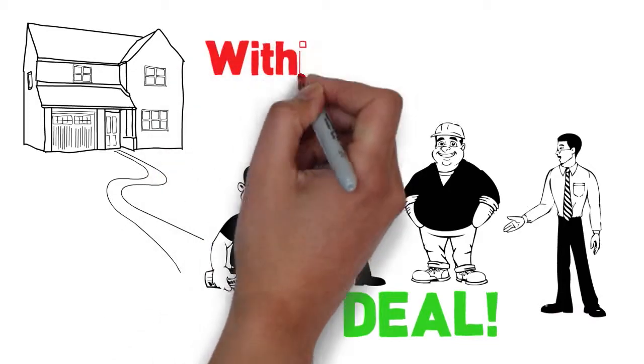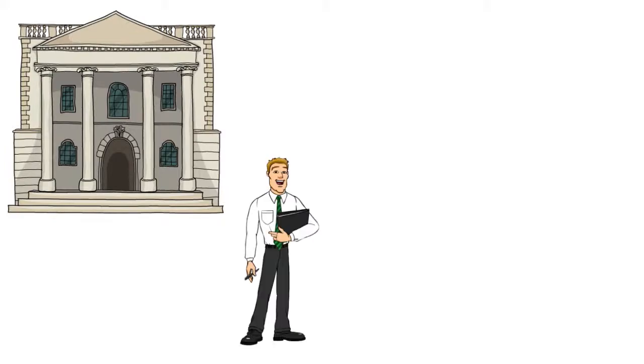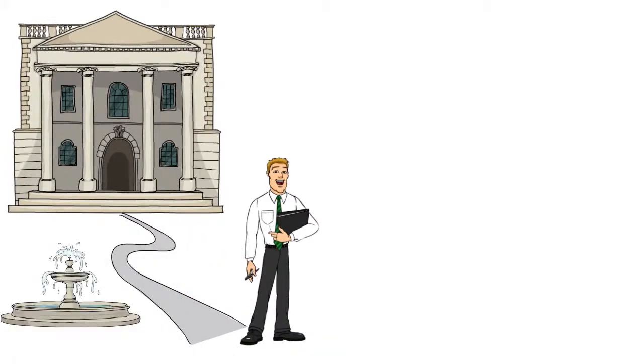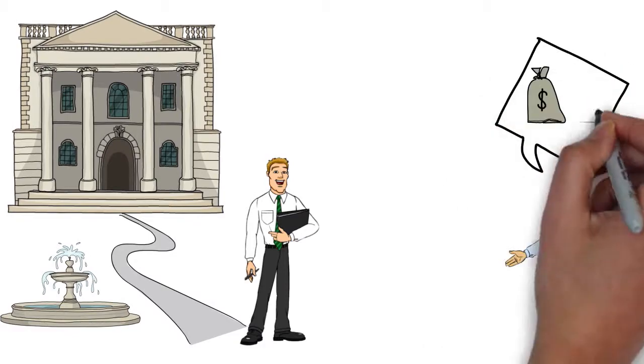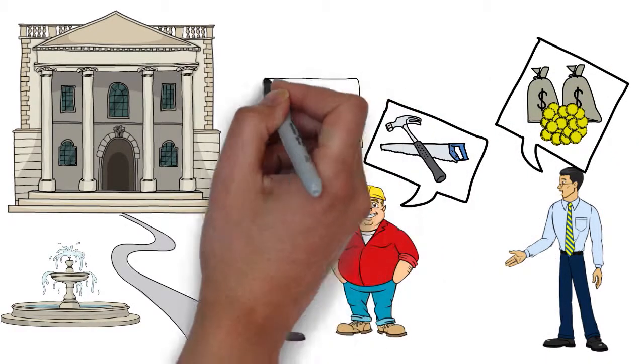And you can do all this and close these deals within 30 days. Now, Charlie makes $5,000 to $15,000 for simply locating below market real estate deals for investors. All because he knows where to look and who to partner with.